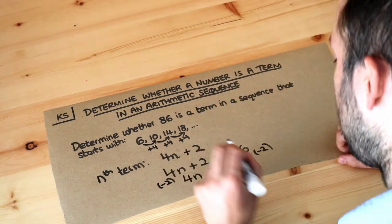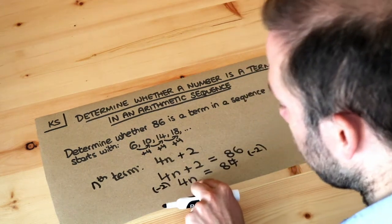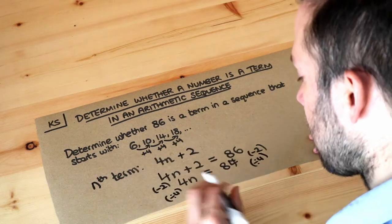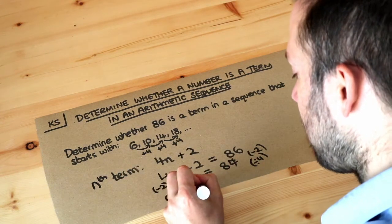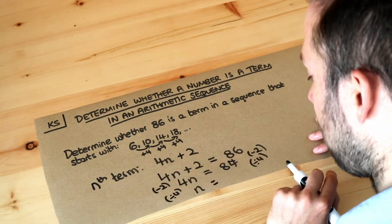And then to get rid of the times by 4 in front of the n we divide by 4, we do the opposite. So that just becomes n because the divide 4 cancels out the times 4, and 84 divided by 4 is 21.